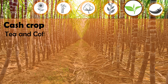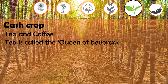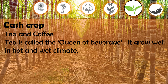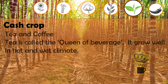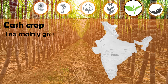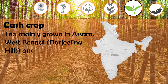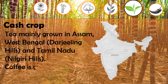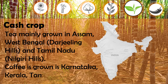Tea is called the queen of beverages. It grows well in a hot and wet climate. Tea is mainly grown in Assam, West Bengal, Darjeeling Hills, Tamil Nadu, and the Nilgiri Hills. Coffee is grown in Karnataka, Kerala, and Tamil Nadu.